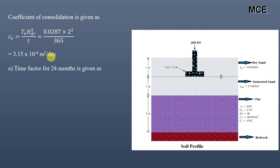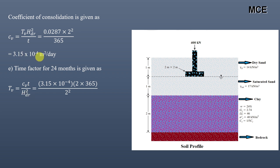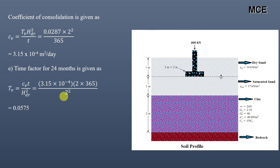To find settlement at 24 months, we first calculate the time factor: Tv = Cv × t / Hd². Using Cv = 3.15 × 10⁻⁴ m²/day, t = 2 × 365 days, and Hd = 2 m, the time factor for 24 months equals 0.0575. Units must remain consistent — time in days and drainage length in meters.